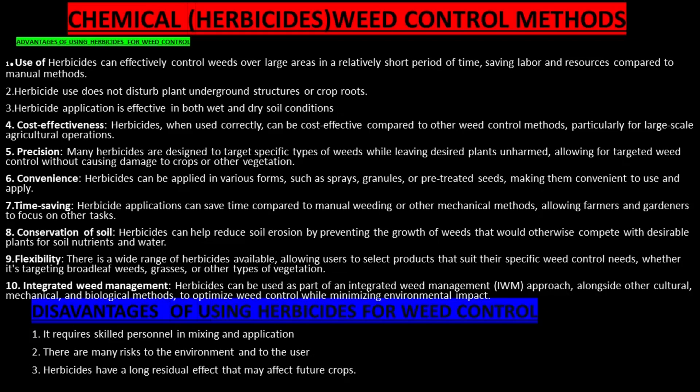Advantages of using herbicides in weed control include that herbicides are effective, saving on labor and money resources compared to other manual methods. Herbicide use does not disturb plant underground structures or crop roots. Herbicide application is effective in both wet and dry soil conditions. It is cost effective compared to other methods, particularly for large-scale agricultural operations. Herbicides are precise — they target specific types of weeds while leaving desired plants unharmed.